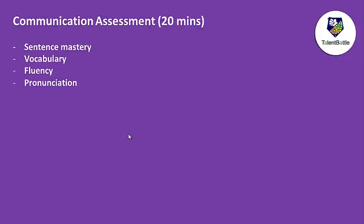Various types of questions are asked in the communication assessment. They may give you a paragraph to read and write in your own words, ask you to read it aloud to check fluency and pronunciation, give you sentences to rearrange into a meaningful paragraph — like para jumbles — to check sentence mastery, and ask vocabulary-based questions. These four skills are the basic focus of the communication assessment.